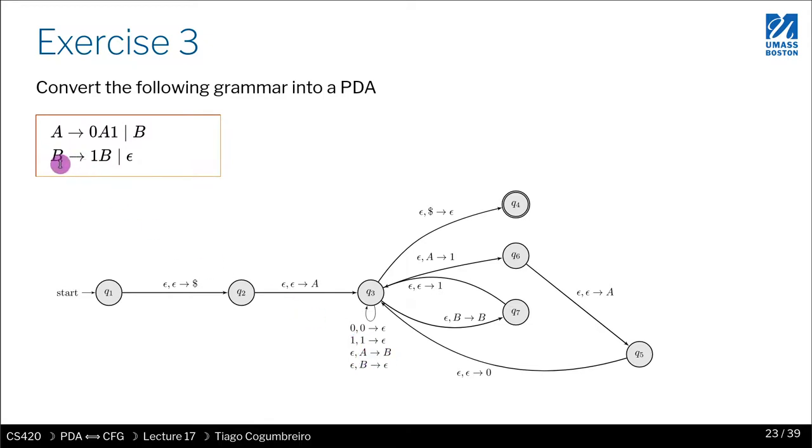And then this one where you go from B to 1B is going to be this short one, and finally B to epsilon. It's going to be B to epsilon here. Okay.